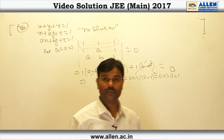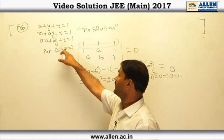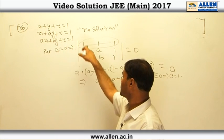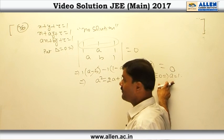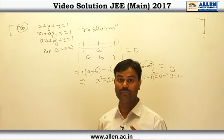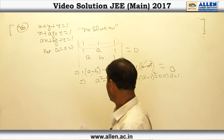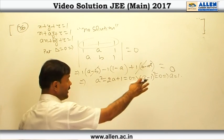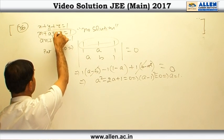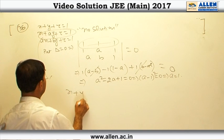So because this system will have no solution, we put delta equal 0 and on solving we get value of a equal 1. But in the question we have to find values of b so that it will have no solution. When we take a equal 1, our first equation and second equation become the same.